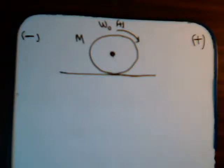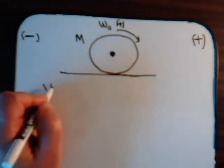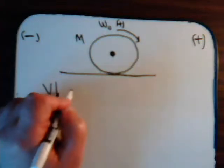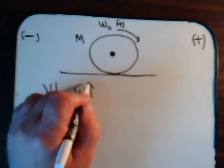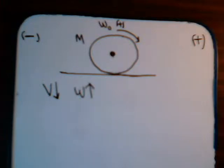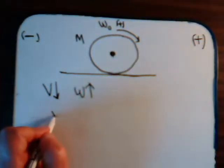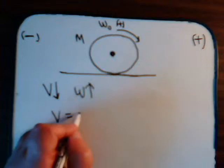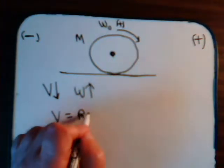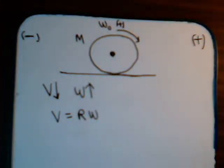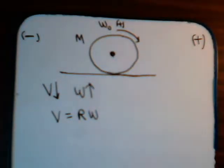Much like the situation in the previous two videos, although in those videos what happened is it began with a linear velocity V-naught, and it had zero angular velocity, and then over time the linear velocity decreased, the angular velocity increased, and there was a time T-prime when the linear velocity was equal to the radius times the angular velocity. As we talked about in video number 30, that's the condition for pure roll.